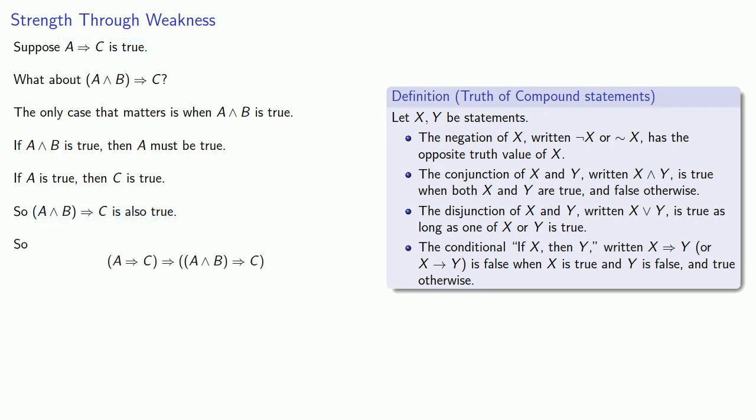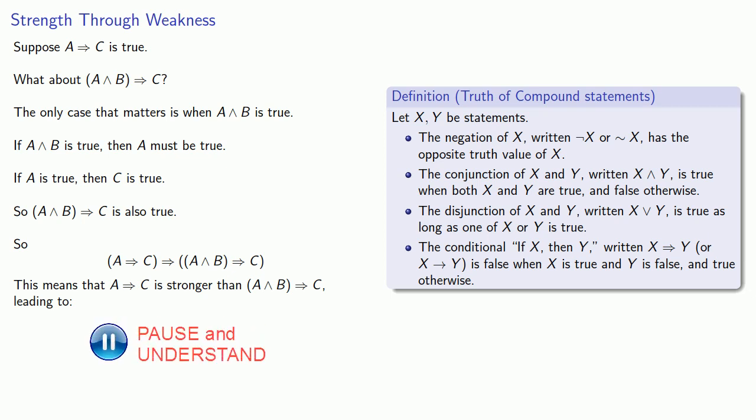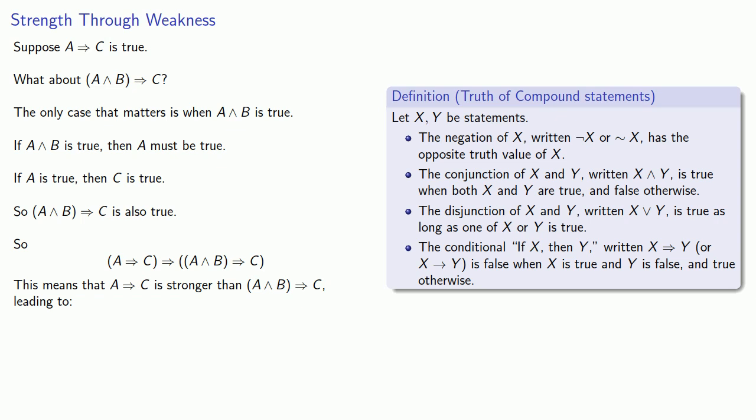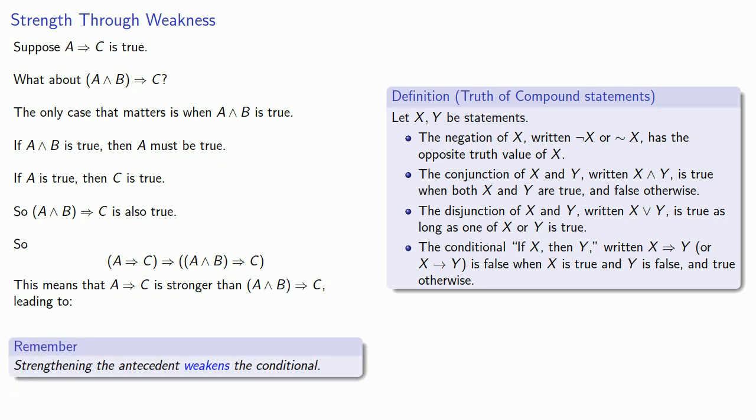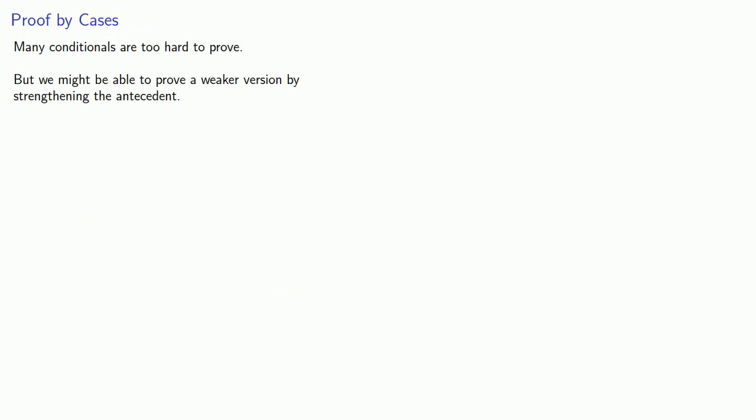And finally, we have our definition of stronger and weaker: the antecedent is stronger than the consequent. And what this means is that if we strengthen the antecedent, we actually weaken the conditional. Now this might not be too bad, because many conditionals are too hard to prove — but we might be able to prove a weaker version by strengthening the antecedent.